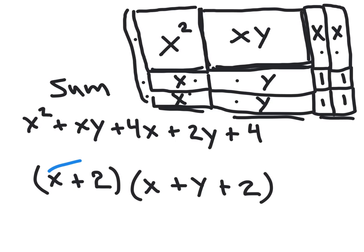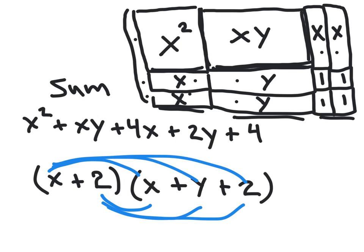Now if we multiplied everything times everything - so the x times all three of those things and the two times all three of those things - what do you think we would get? You're right. So this is the area represented as a product.